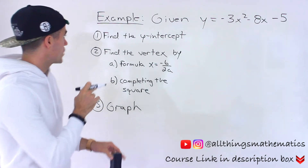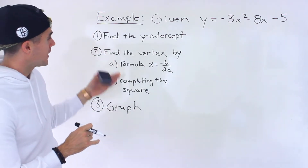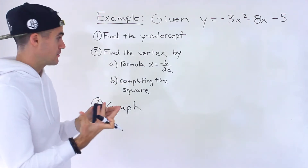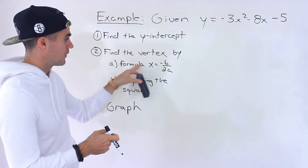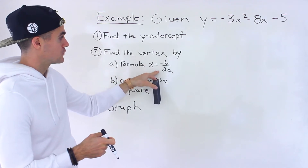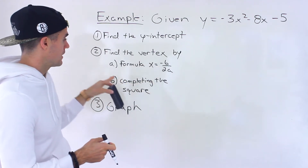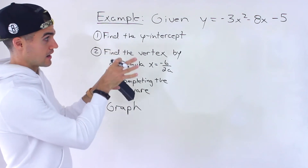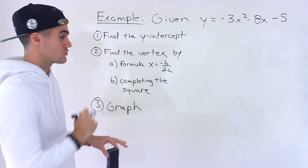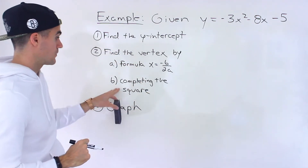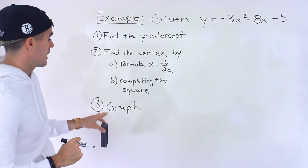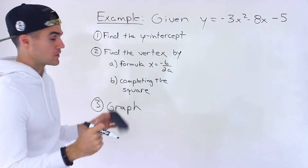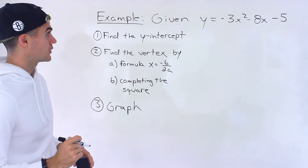Given that quadratic, we have to: number one, find the y-intercept; number two, find the vertex by two different methods — using the formula where the x-value of the vertex is negative b over 2a, and then by completing the square, converting standard form to vertex form; and then number three, once we have that information, we can make a solid graph.